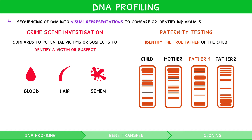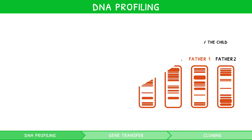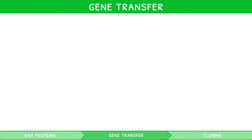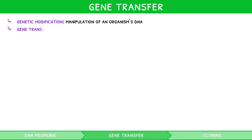DNA can be used to identify individuals, but you also need to know how it can be changed by gene transfer. Gene transfer is an example of genetic modification — the manipulation of an organism's DNA. Gene transfer as a process involves the movement of genetic material from one species to another, enabled due to the universality of genetic code.